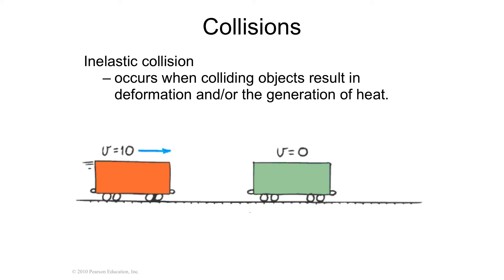So an inelastic collision is when there would be a deformation. So let's say I throw a can from the top of the roof, and it hits the sidewalk, and it crushes the can. Part of the energy didn't bounce that can. Part of the energy deformed that can.